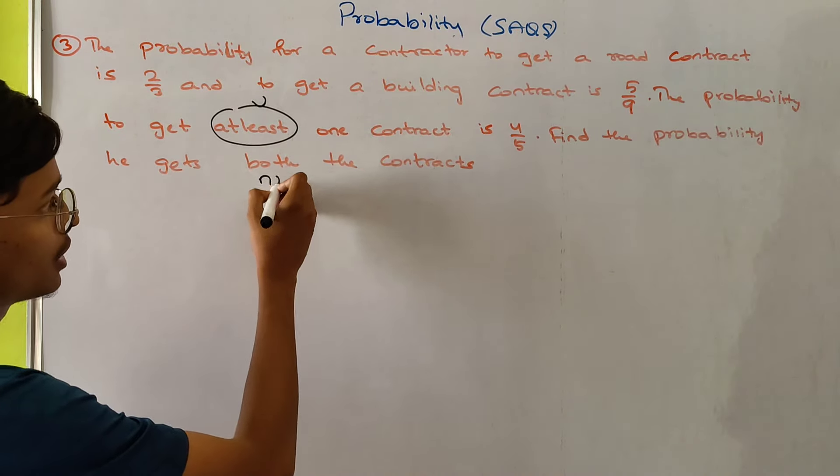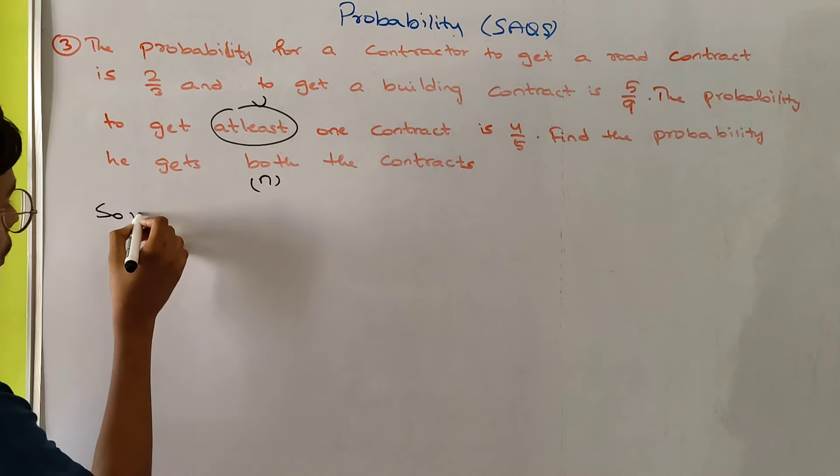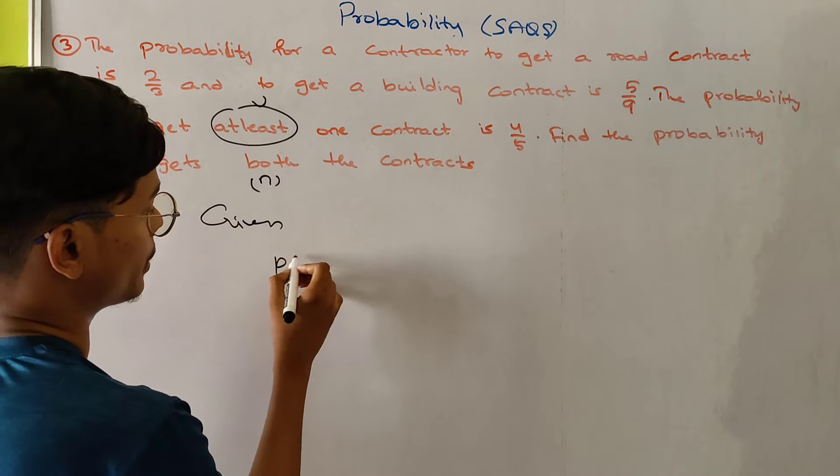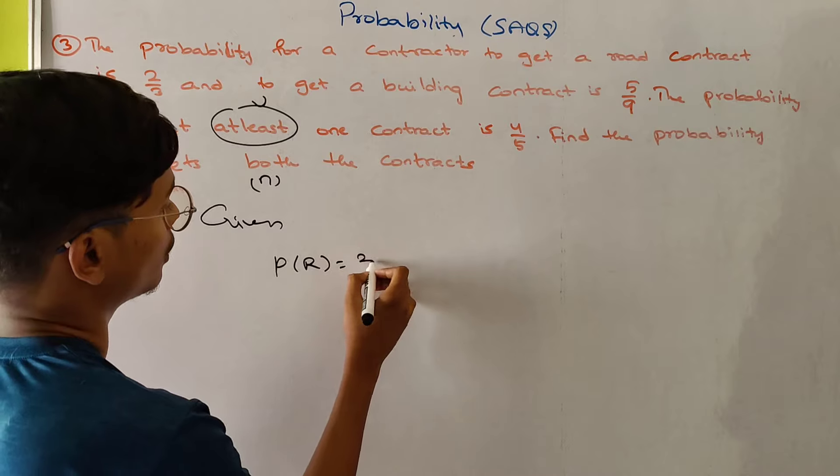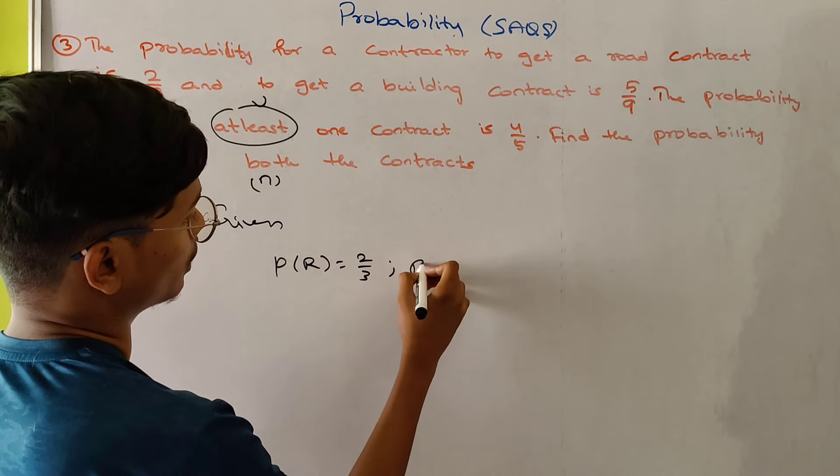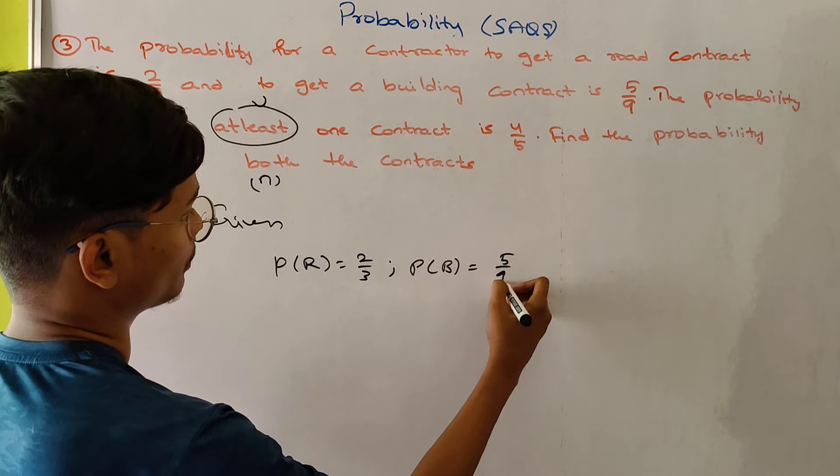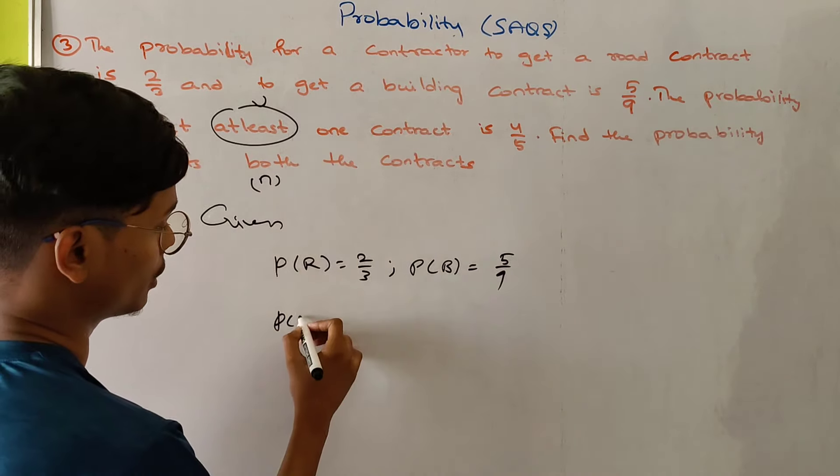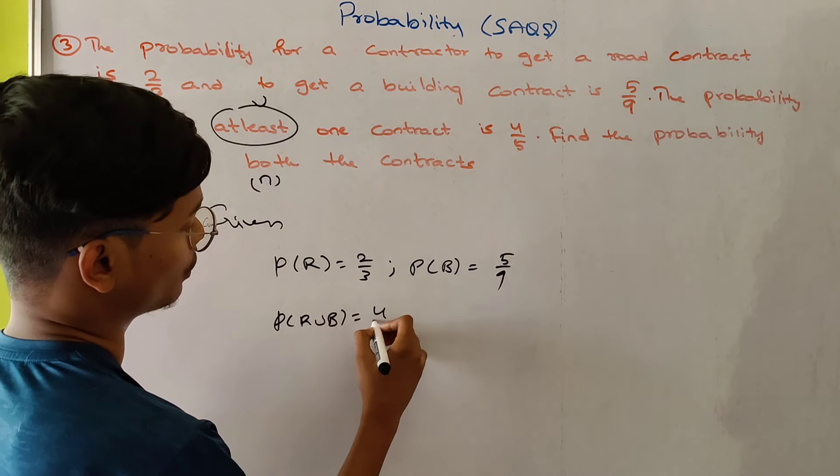Both are intersectional. The probability of a contractor to get a road contract is 2 by 3, to get a building contract is 5 by 9, to get a union the probability of R union B is 4 by 5.